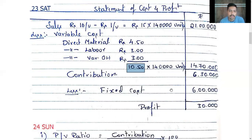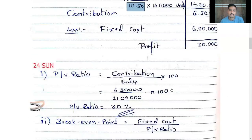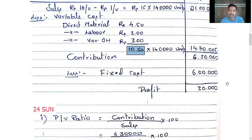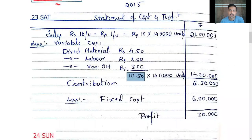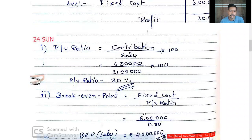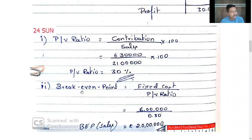Point number 1 — PV ratio. Contribution divided by sales into 100. Contribution 6,30,000 divided by sales 21,00,000 equals PV ratio 30%.